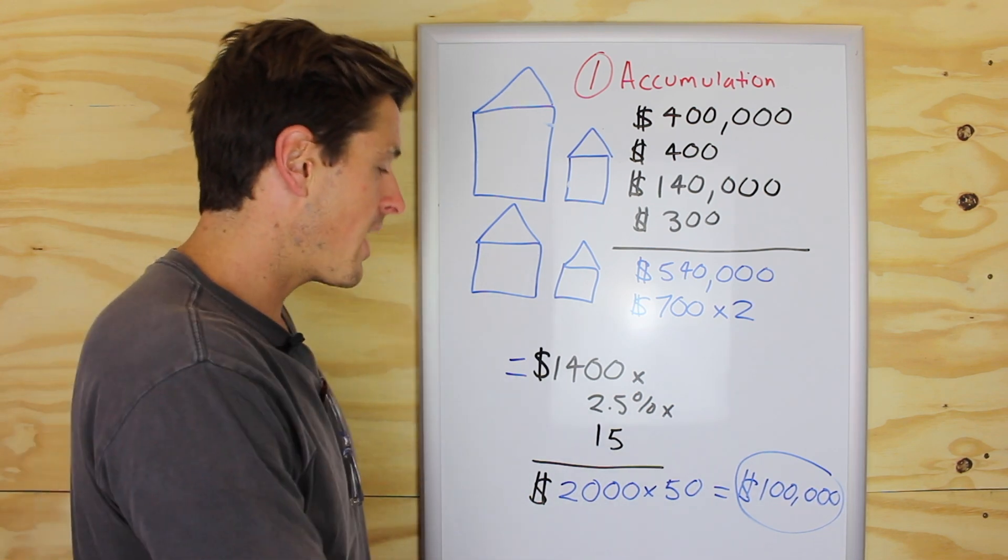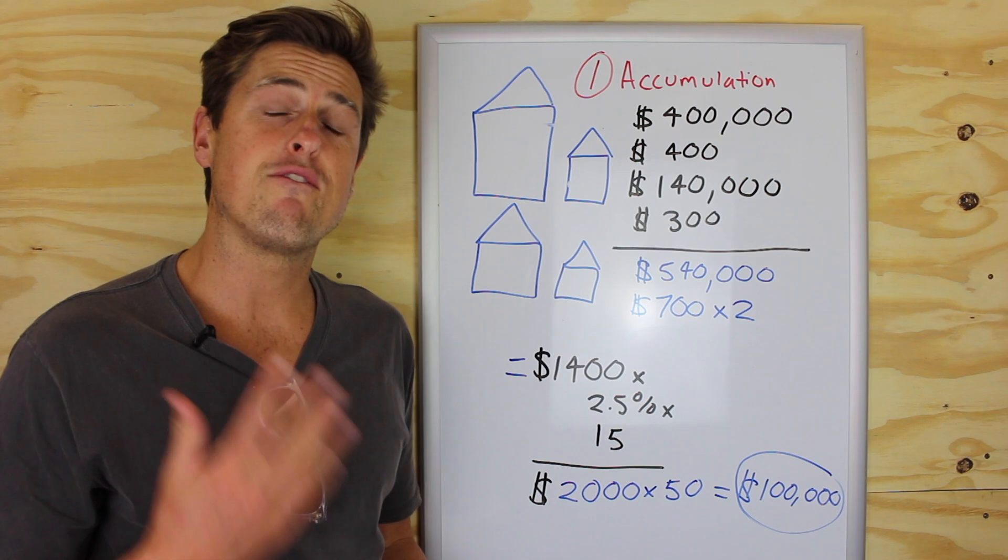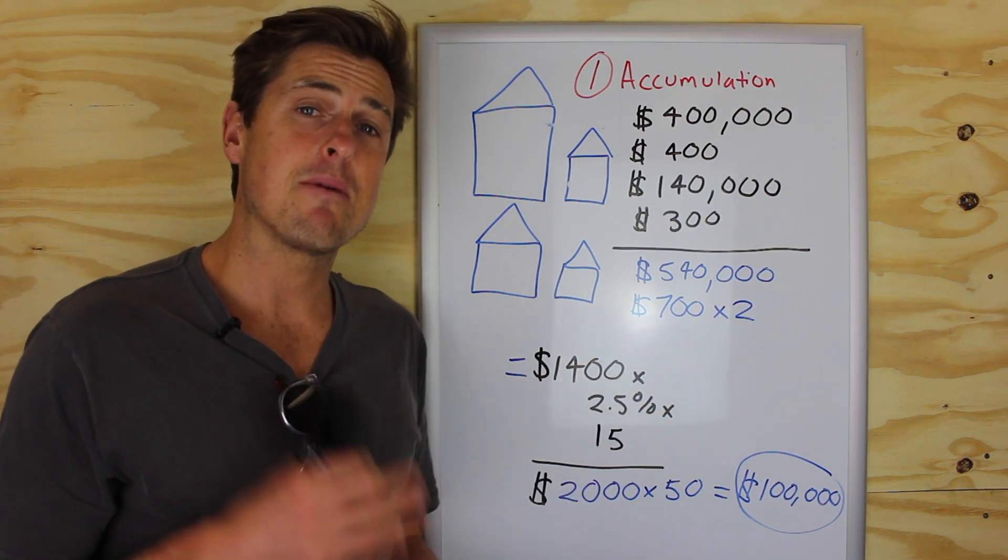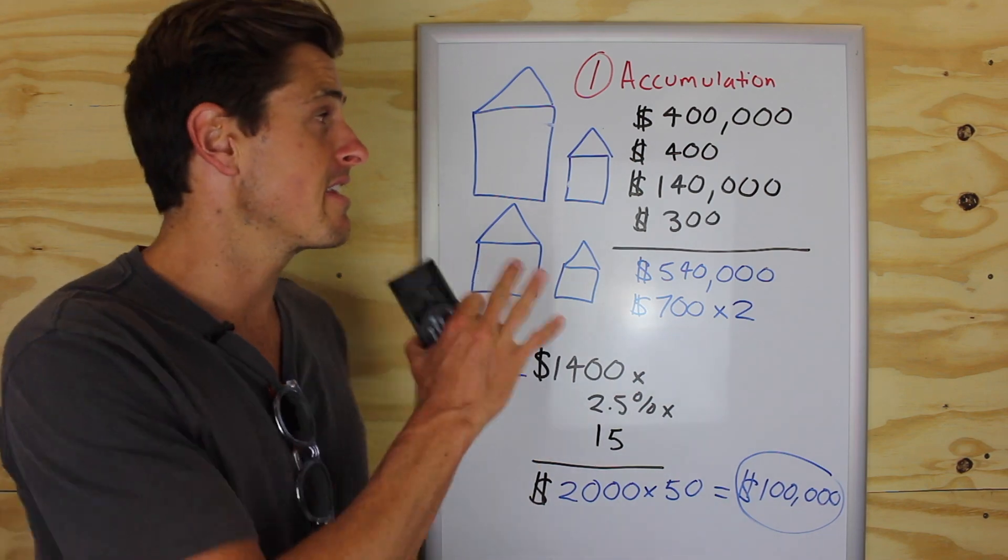I'm just going to wipe this whiteboard out. And then I'm going to come back and talk about the four properties, the financial freedom strategy, which is similar, but a little bit different and a little bit faster than this one.